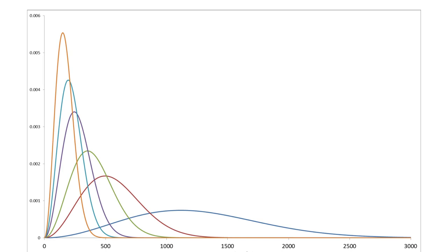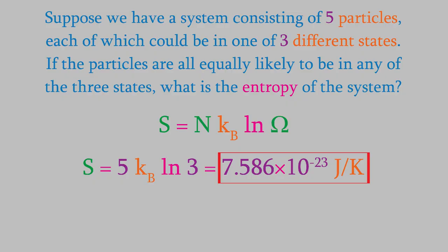The widest distribution we can get is the one in which all the different microstates can be occupied with equal probability. And that's the situation we had in the second problem we did, in which, because the different states were all degenerate, all five particles could be in the three states with equal likelihood. For that reason, the entropy in that situation was the highest.